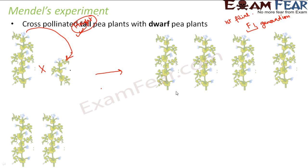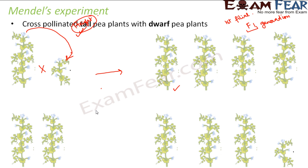He took one of the plants from the F1 generation and self-pollinated it — that means the pollen grain of the same plant was used to pollinate itself. The pollen grain of that flower was passed to the ovary of the same flower. The plant was self-pollinated, and it was found that out of four, three were tall but one was short. These numbers represent a ratio — for example, out of a hundred plants produced, maybe 80 were tall and 20 were dwarf. So he saw that one-fourth of the plants were dwarf.